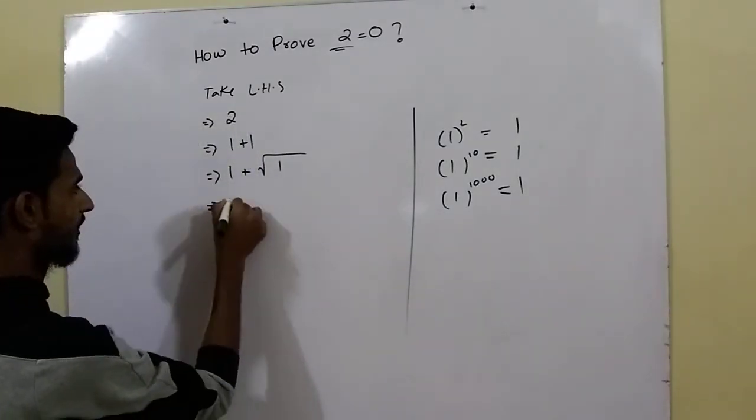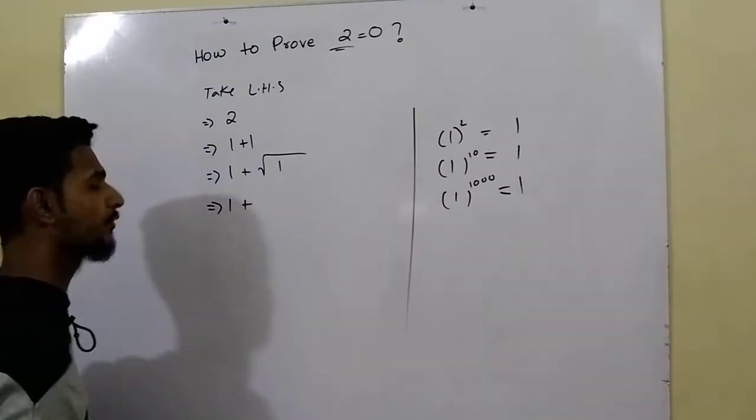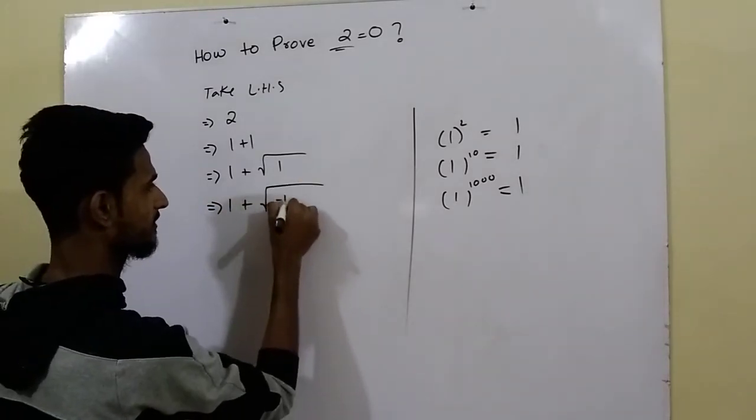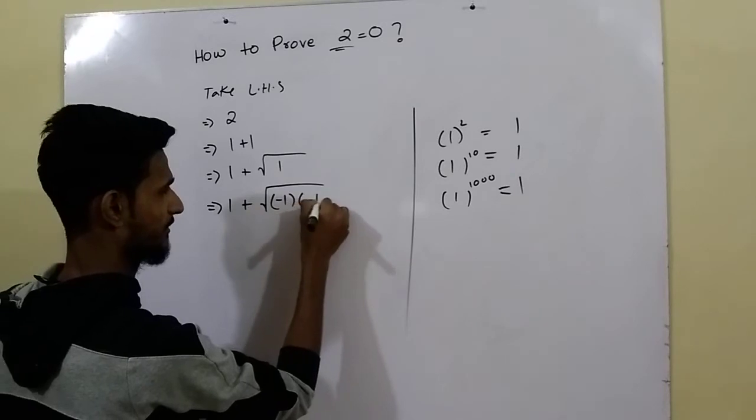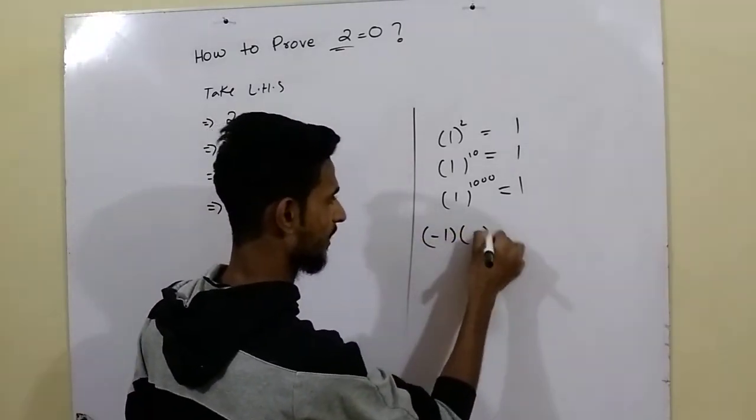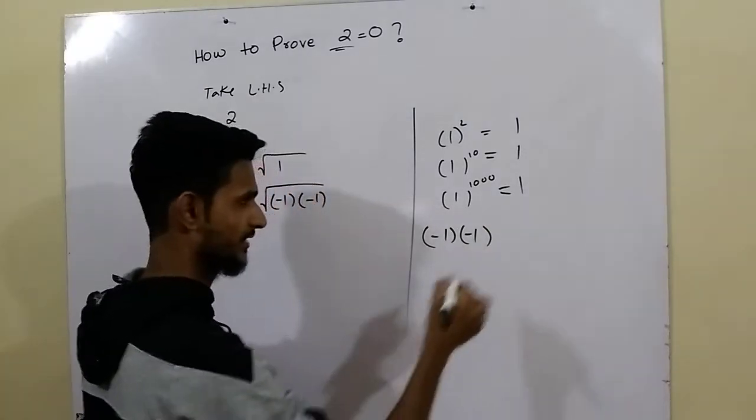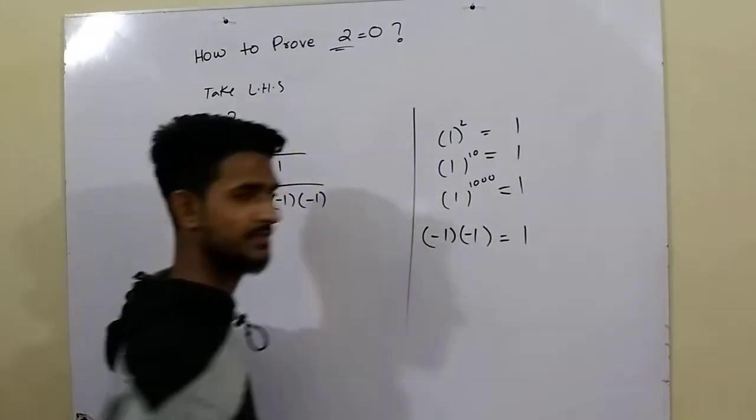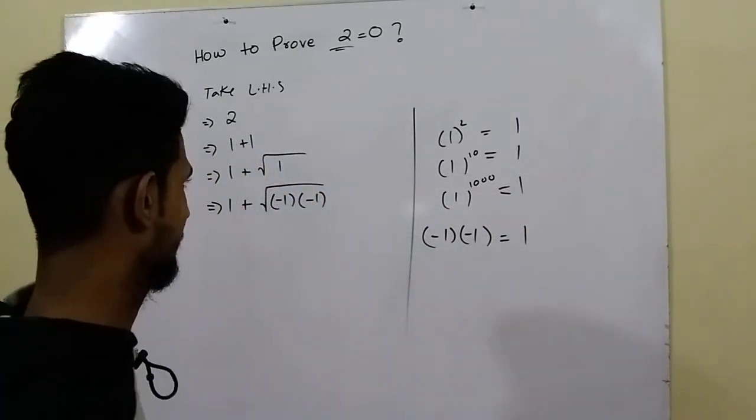So here, 1 plus, we have under root 1 over here. Can I write this under root 1 as minus 1 multiplied by minus 1? Because whenever the minus 1 multiplied by minus 1, it will again become the same 1.